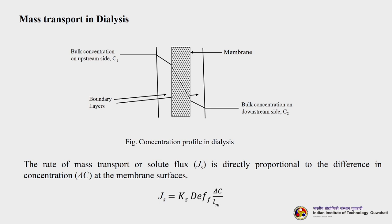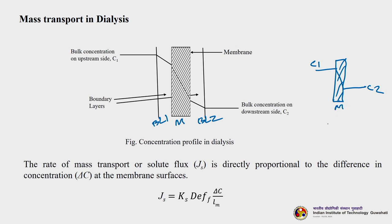Let us understand mass transport in dialysis. This figure shows the concentration profile in dialysis. There is a membrane with boundary layer 1 and boundary layer 2 on either side. Without boundary layers, the membrane alone gives a concentration profile from C1 on the upstream to C2 on the downstream side. The interface concentrations are also present. Our interest is to calculate the solute flux Js, since it is the solute — not the solvent — that is transported.